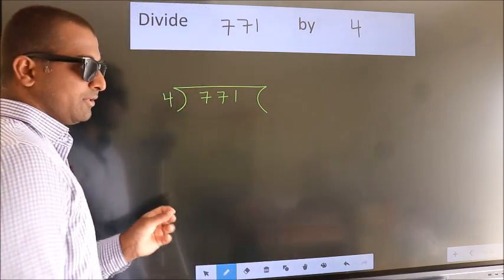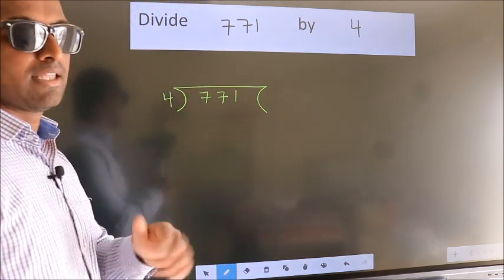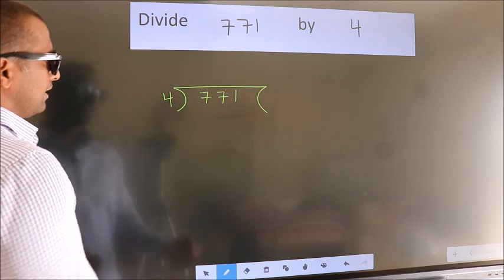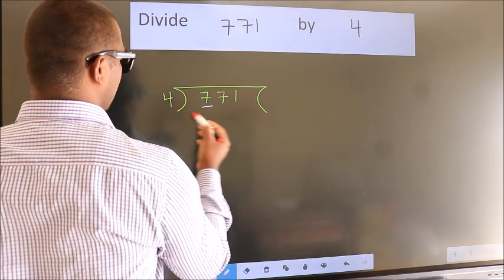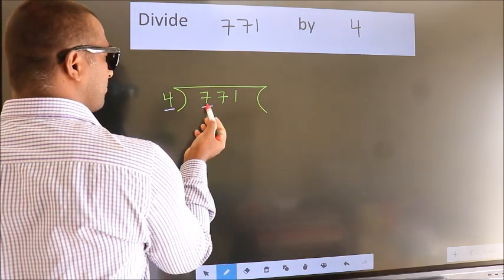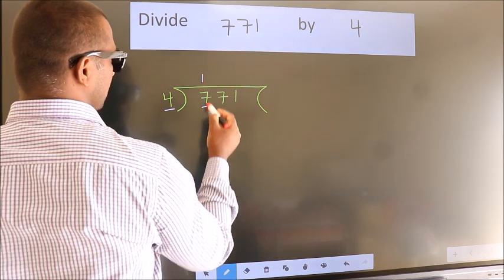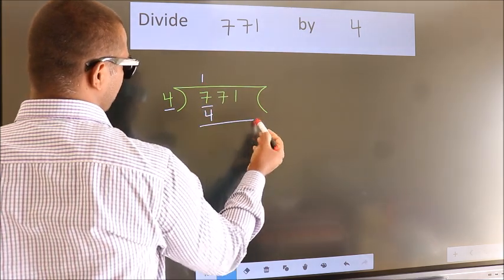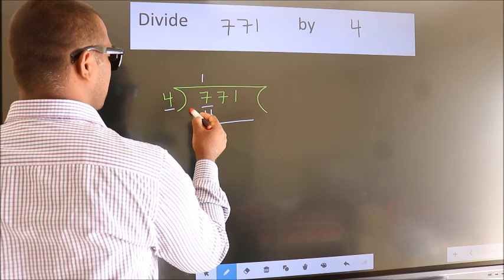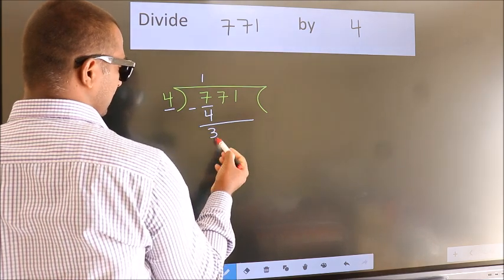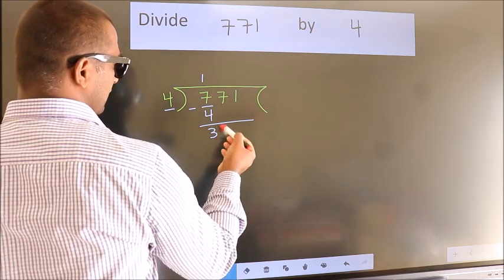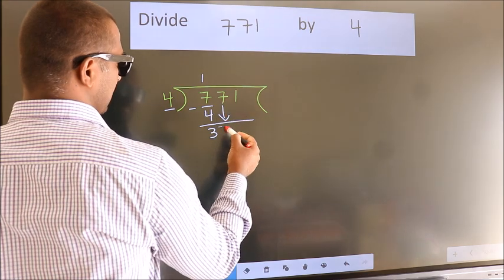This is step one. Here we have 7. Four, a number close to 7 in the four table, is 4 ones 4. Now we subtract and get 3. After this, bring down the next digit, 7.